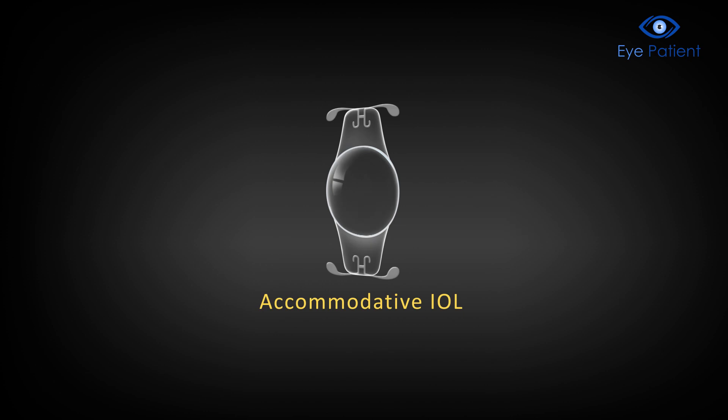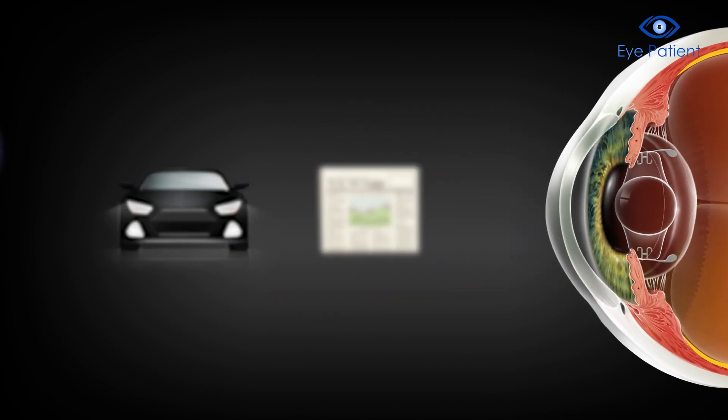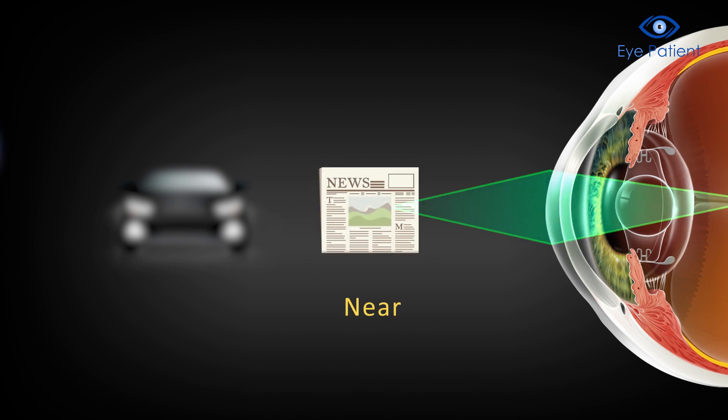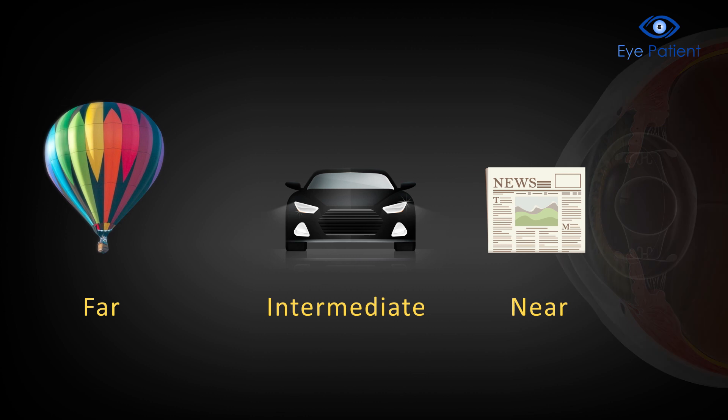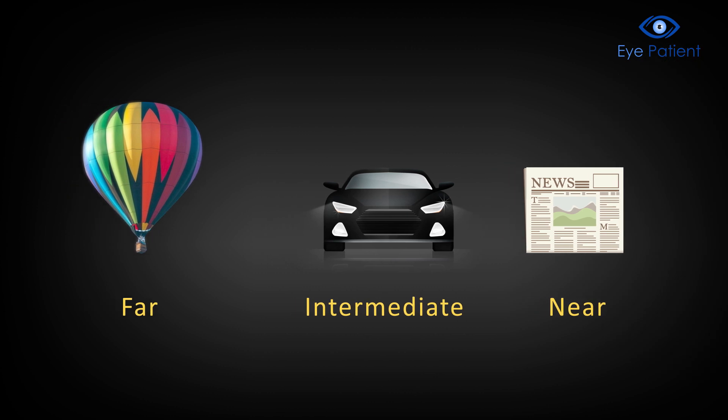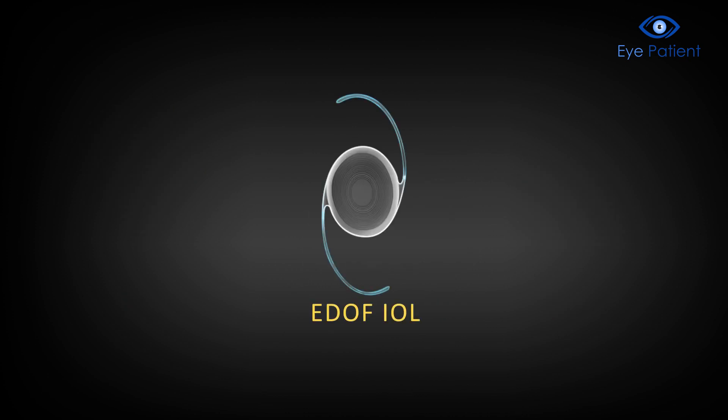Accommodative IOLs enable the patient to shift focus and see objects which are both near and far. The use of glasses or contact lenses are minimized, as these IOLs can provide sharp vision at multiple distances.